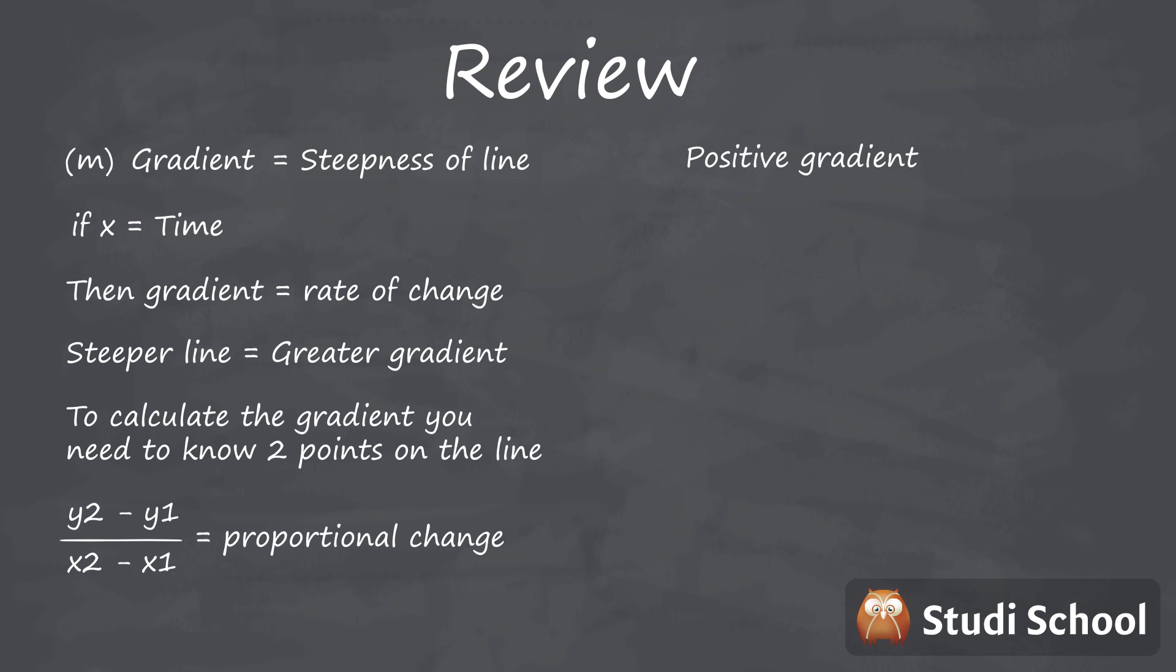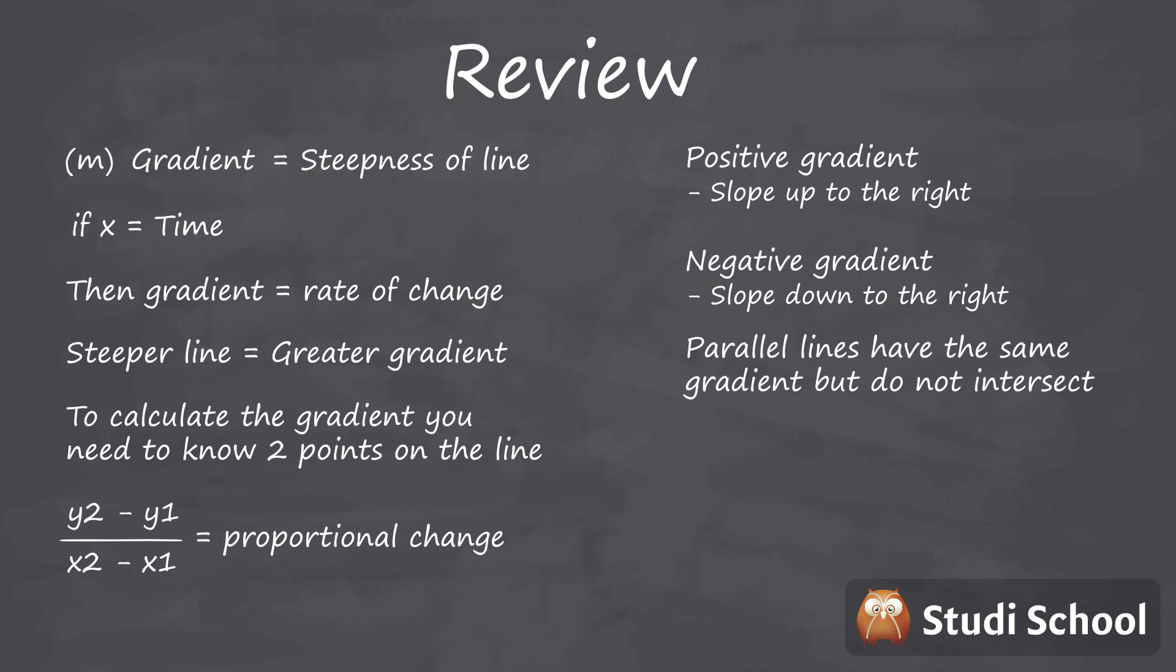Lines with positive gradients slope upwards to the right and lines with negative gradients slope downwards to the right. Two lines that are parallel have the same gradient but do not intersect with each other.